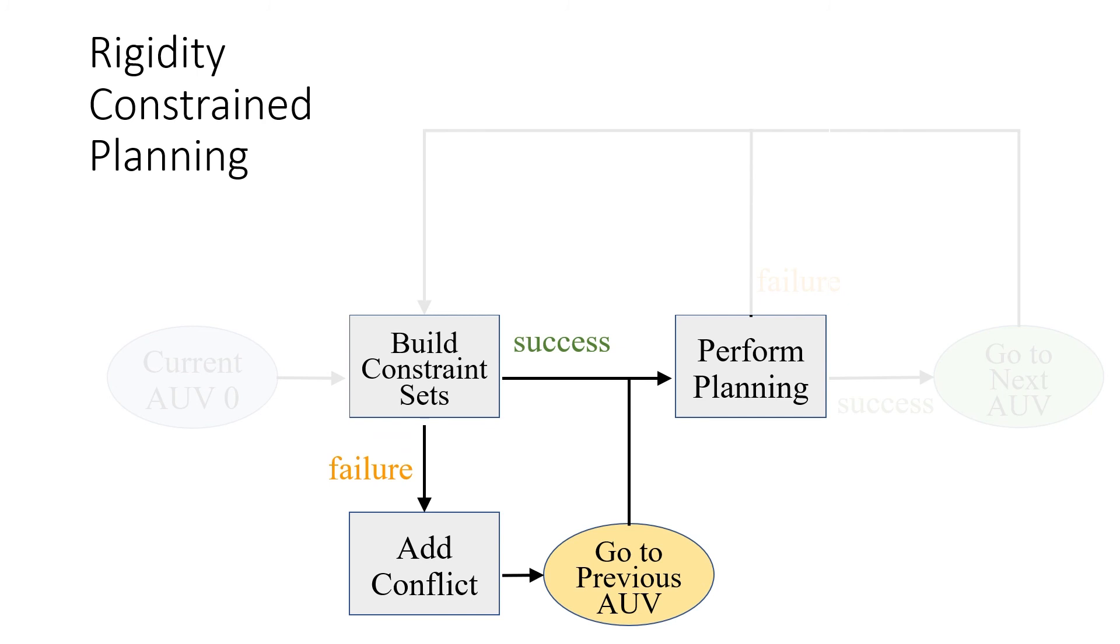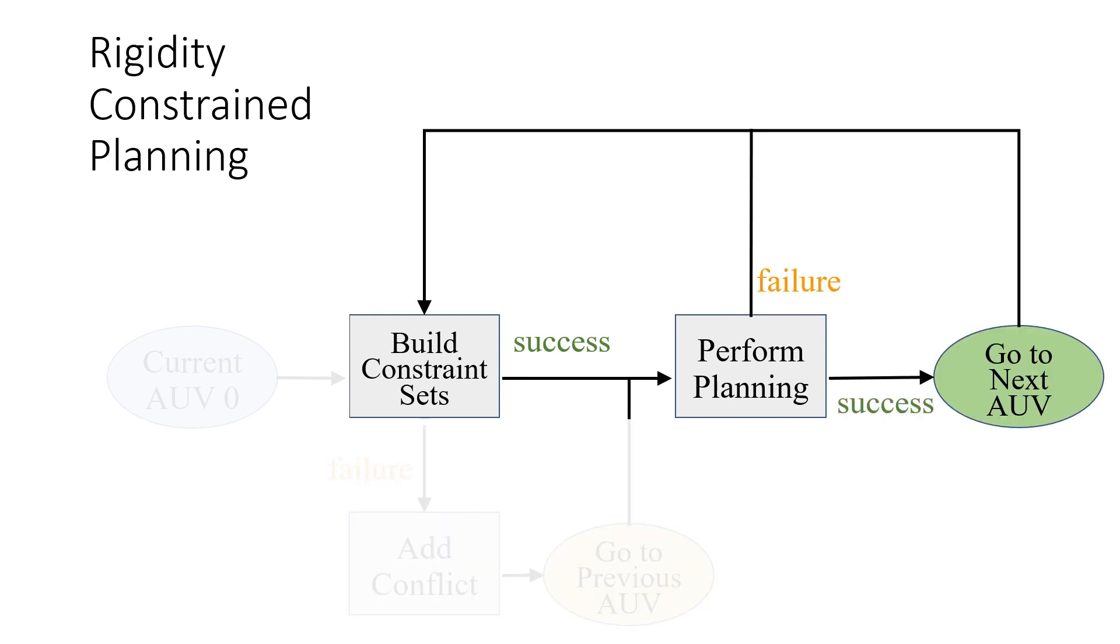In this event, we record the time and location of the previous AUV at the time of conflict and restart the planning process of the previous AUV while disallowing it from occupying any conflict states. This allows us to try to flexibly recover from earlier trajectories which may prevent future AUVs from finding valid paths. It is also possible that the planning process fails even though there originally was a valid path to the goal location. This occurs when conflicts are added and the AUV is forced to re-plan its path while taking the new conflicts into account. In these cases, we reconstruct the constraint sets for that AUV and then continue the planning cycle.